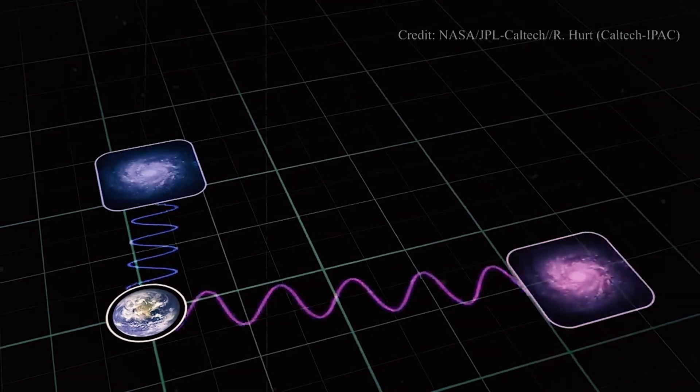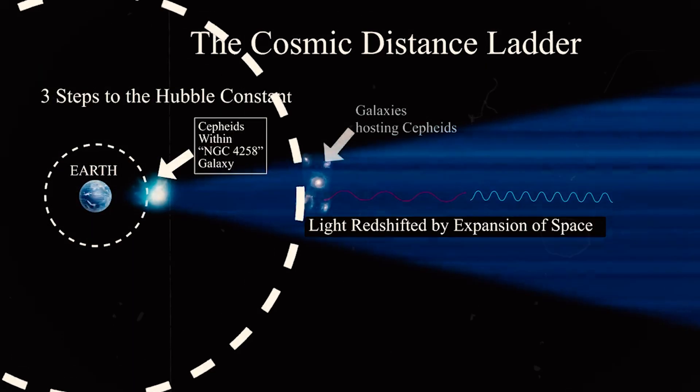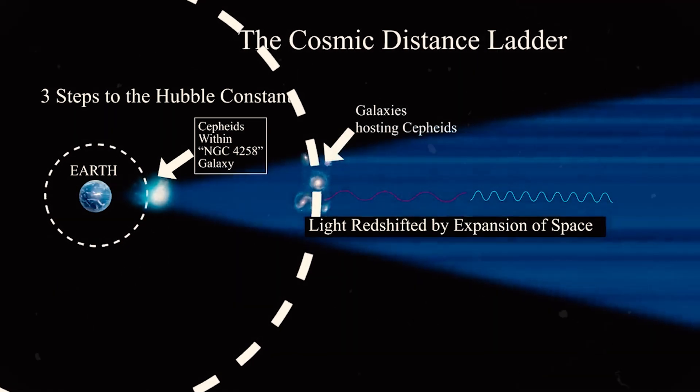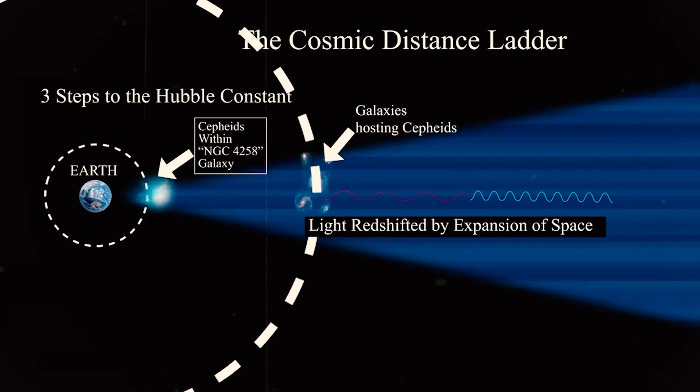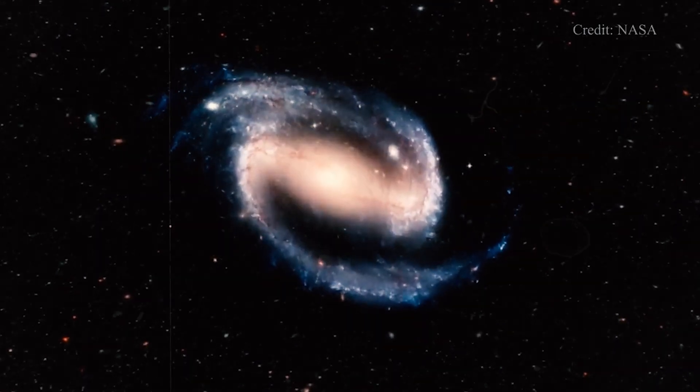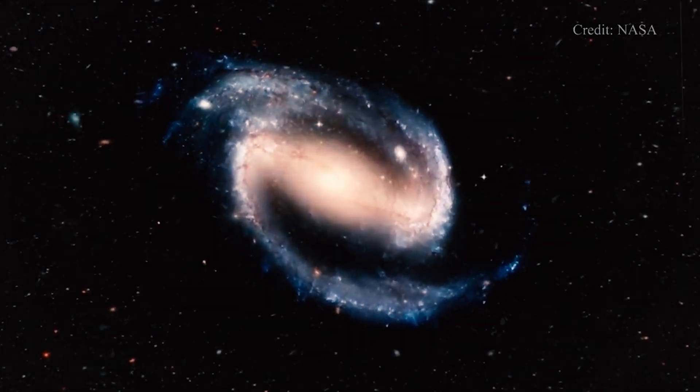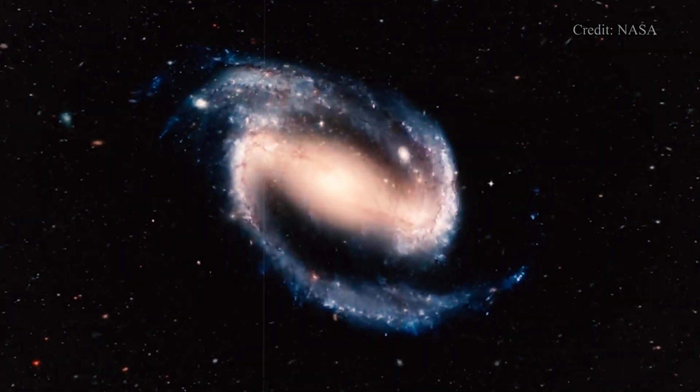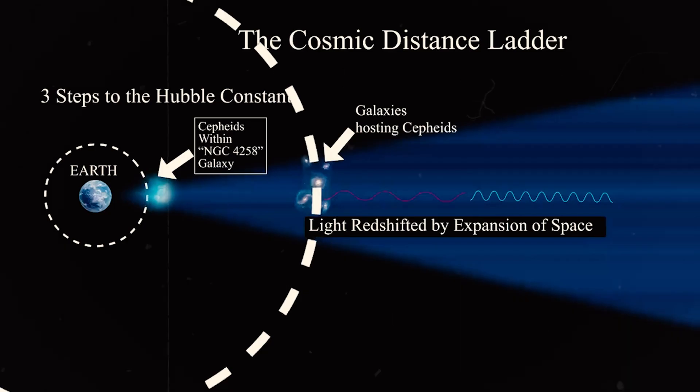The next rung on the cosmic distance ladder is the measurement of distances to nearby galaxies using a type of variable star known as the Cepheid variable. Cepheids have a well-known relationship between their intrinsic brightness and their period of variation, which allows astronomers to determine their distance based on their observed brightness.